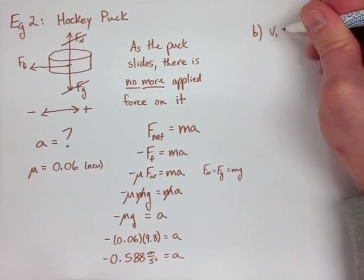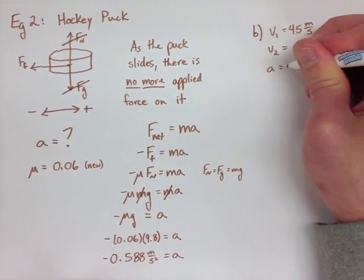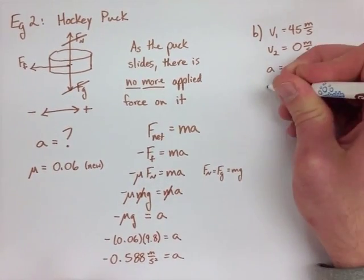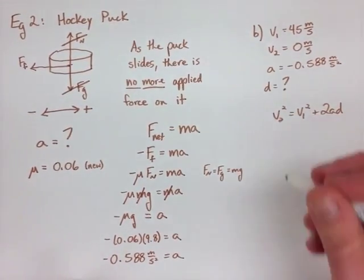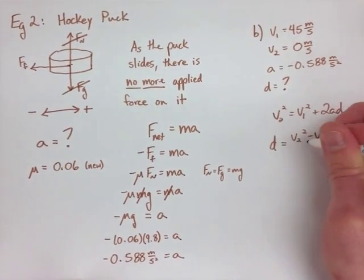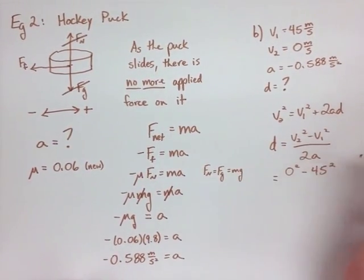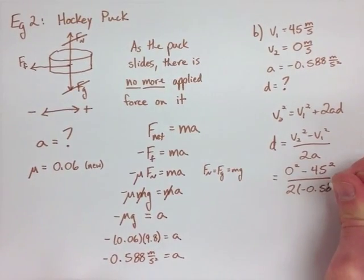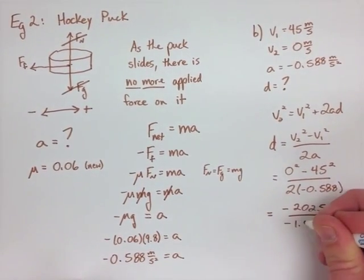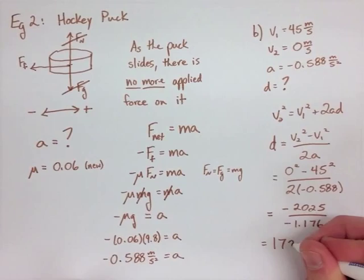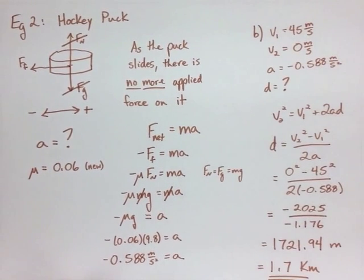Part B is a kinematics question. Given our initial velocity of 45 meters per second, we know we're coming to a stop, which is 0 meters per second. When we know our acceleration at negative 0.588 meters per second squared, what's our distance? So, we use V2 squared equals V1 squared plus 2AD. We substitute all our values in after we've rearranged to D equals V2 squared minus V1 squared over 2A. We get 0 squared minus 45 squared, all over 2 times our acceleration. This equals negative 2,025 over negative 1.176, which is 1,721.94 meters or 1.7 kilometers.